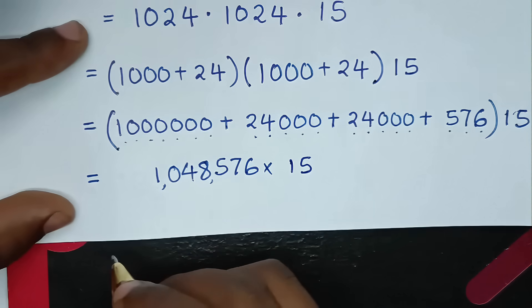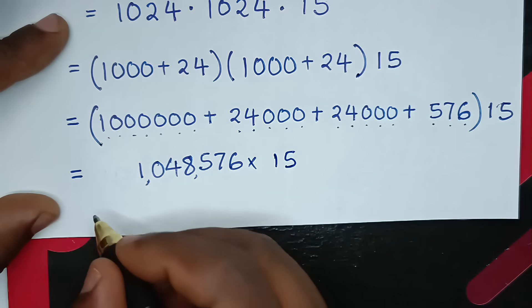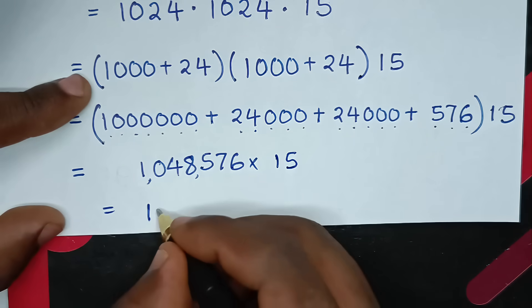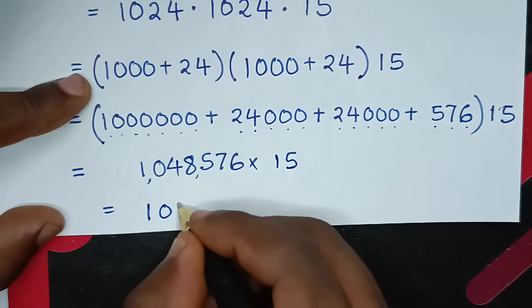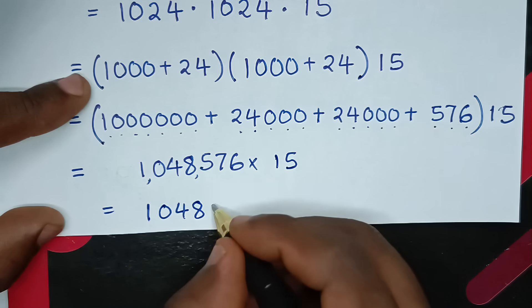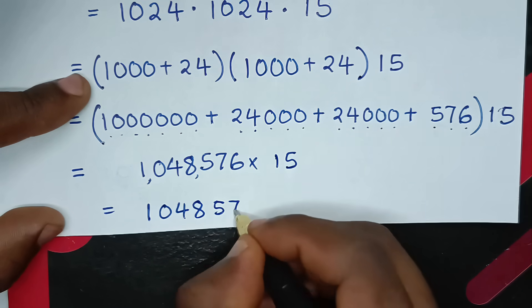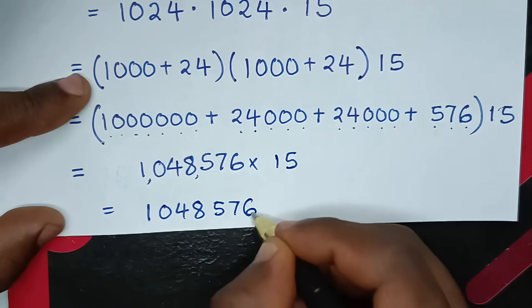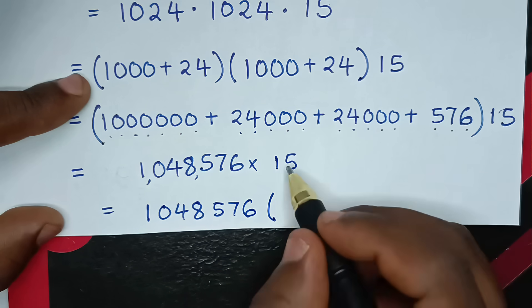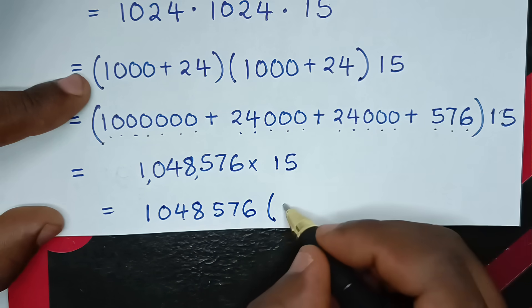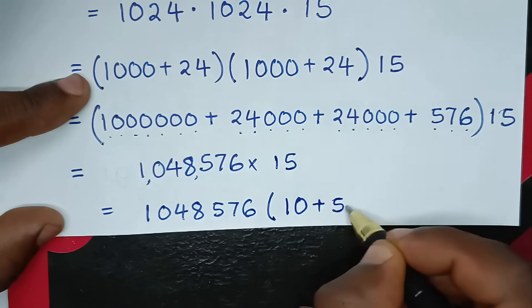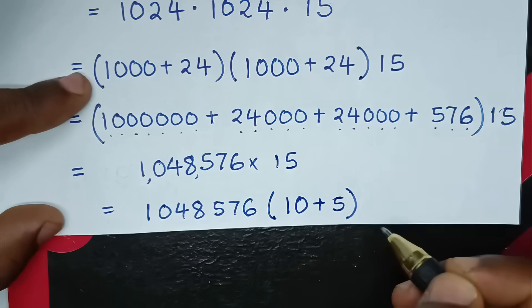Then in the next step, it will be equal to: this here which is 1,048,576, bracket, and 15 is the same as 10 plus 5, bracket.